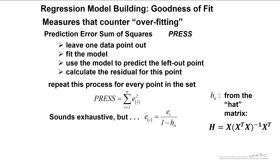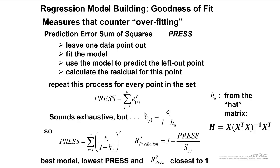Software tools like Minitab will automatically do this, and your goal is to choose a model with the lowest press and an R squared predicted. R squared predicted is related to press. That is closest to one. And so these are two other parameters that we can look at to choose a good model.